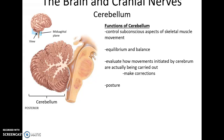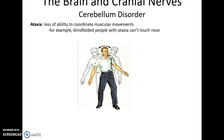The function of the cerebellum involves controlling subconscious aspects of skeletal muscle movement, equilibrium, and balance, and evaluating how movements initiated by the cerebrum are actually being carried out — comparing what we want to do with what we are actually doing and making corrections. The cerebellum also helps control skeletal muscles involved in maintaining posture. Damage to the cerebellum can cause ataxia — a loss of ability to coordinate muscular movements, similar to how someone moves when drunk. A classic test is that a blindfolded person with ataxia cannot touch their nose.